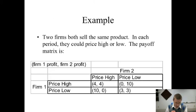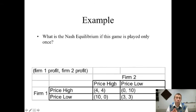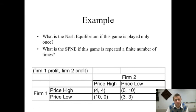So the example that we're going to go through: two firms sell the same product. They could price low or price high. Here's the payoff matrix. If they both price high, they each get 4. If they both price low, they only get $3 in profits each. But if one of them prices low while the other prices high, the one who prices low reaps all the profits, $10 in profit for that firm. What is the Nash equilibrium if this game is played only once? What's the sub-game perfect Nash equilibrium if this game is repeated a finite number of times?